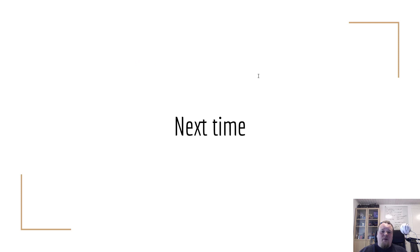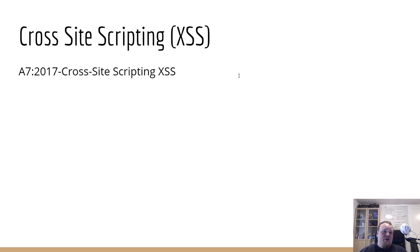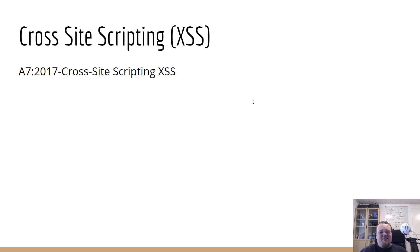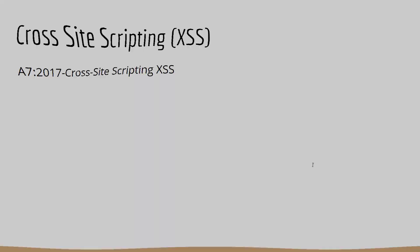Let's go back to the slideshow. Next time we will talk about something called cross-site scripting, or XSS — the A7 vulnerability in the OWASP Top 10. I hope you liked the video. Please subscribe and like, and see you next time.